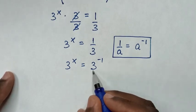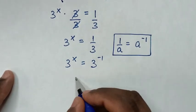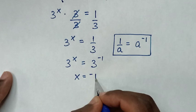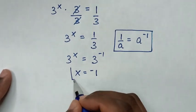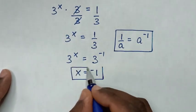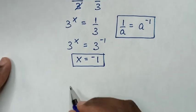Then, because we have the same base of 3, so we'll compare the powers. Then x is equal to -1. Therefore, this is the final answer for the value of x in this problem. Now,